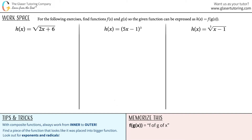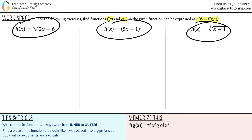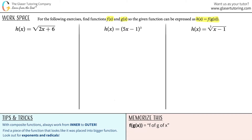For the following exercises, find functions f of x and g of x so that the given function can be expressed as h of x equals f of g of x. We did a couple of these already, so hopefully we can get these. It looks like they gave us three composite functions and we now have to find the parts — this is like the answer you usually find, but now we have to find the individual pieces: what f of x is and what g of x is.